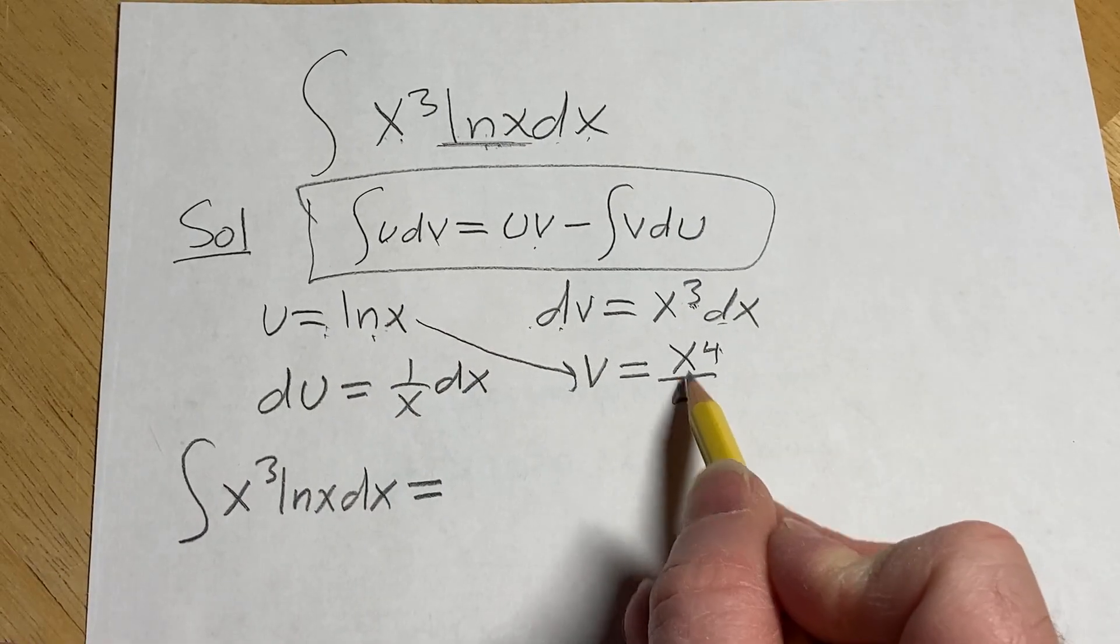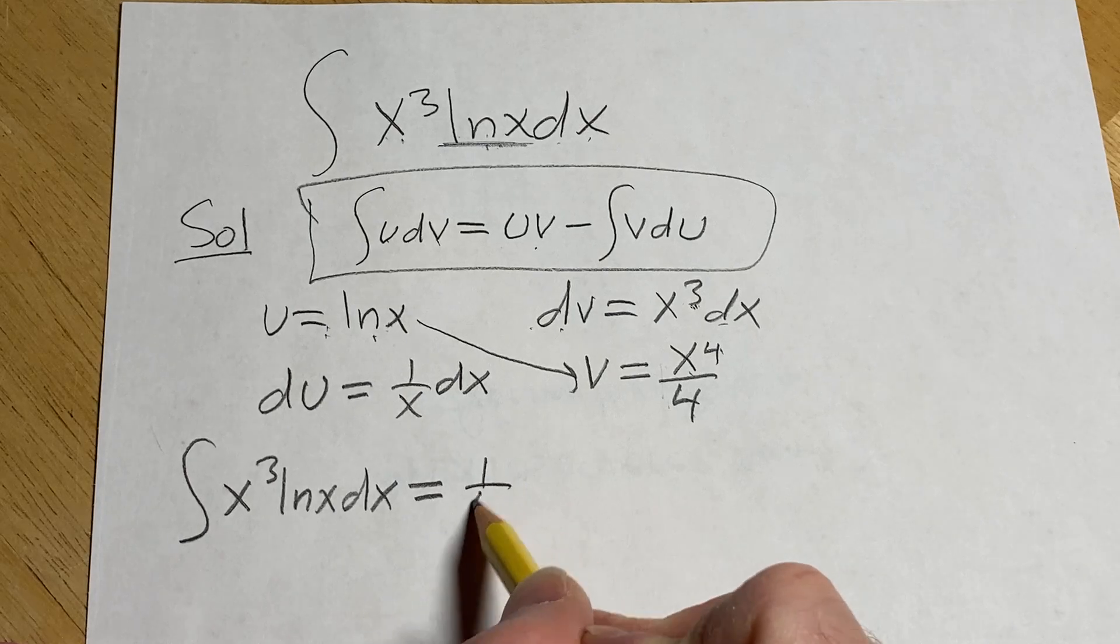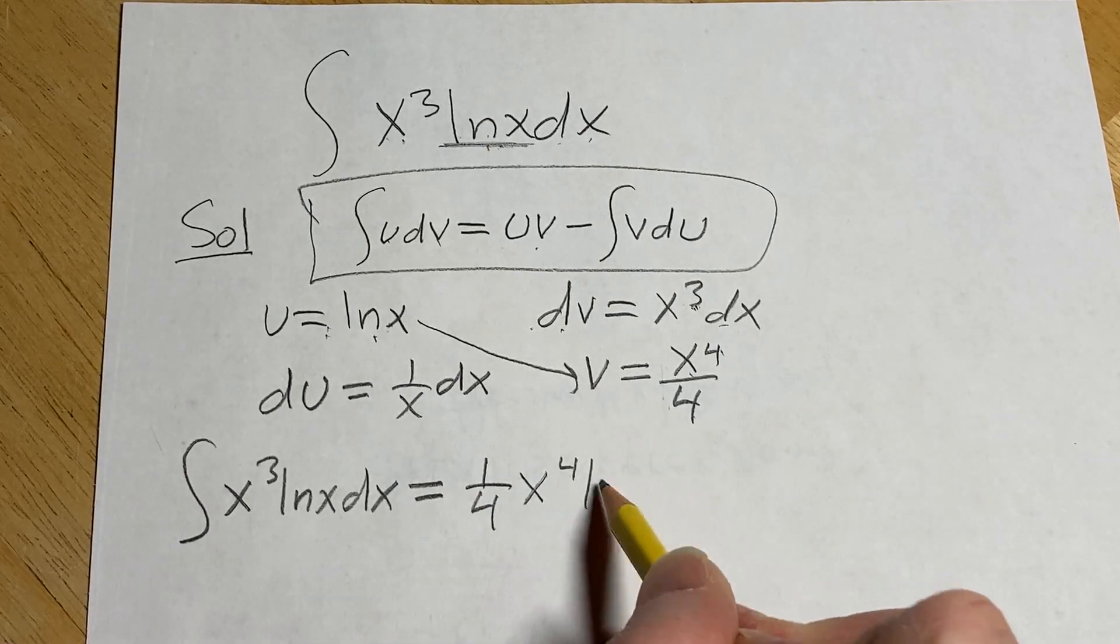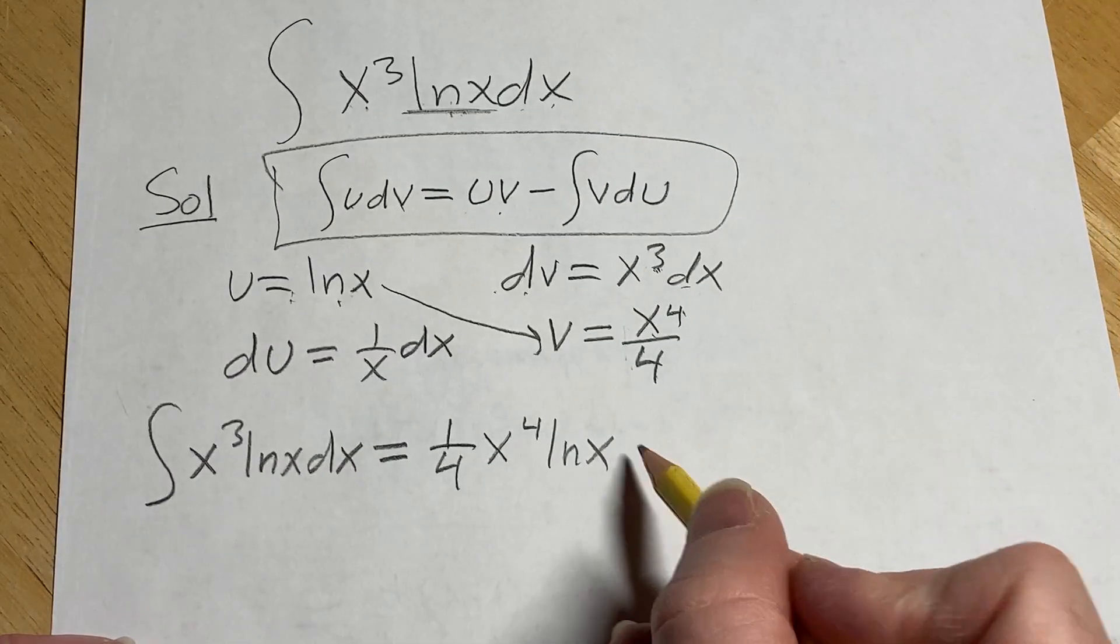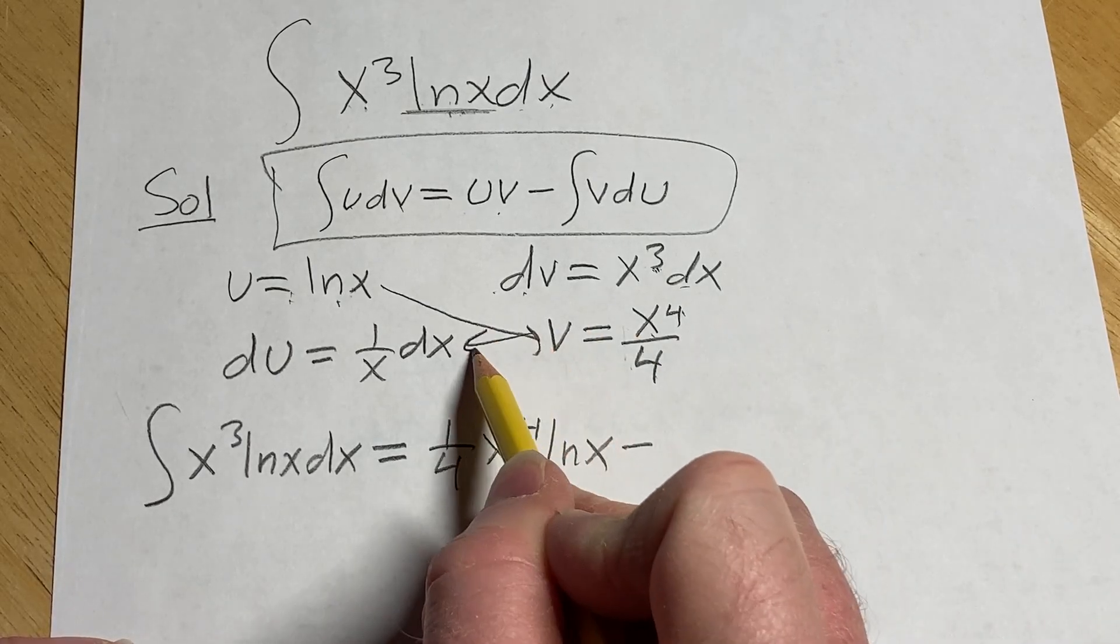Now what I'm going to do here is basically pull out the 1 over 4 and write it like this x to the 4th lnx minus the integral of vdu so this times this.